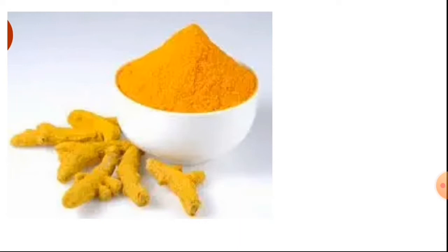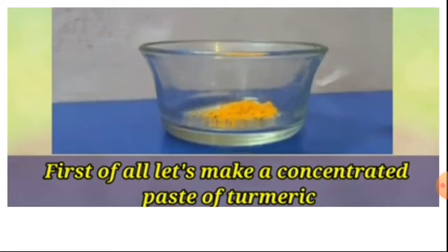As all of you know, turmeric — the yellow color turmeric powder — we use as a spice in our kitchen. Here, this turmeric powder is also useful as an indicator in our lab to test whether substances are acidic or basic. To prepare the indicator from turmeric, first we have to take the turmeric powder and make a concentrated paste by adding water to it.